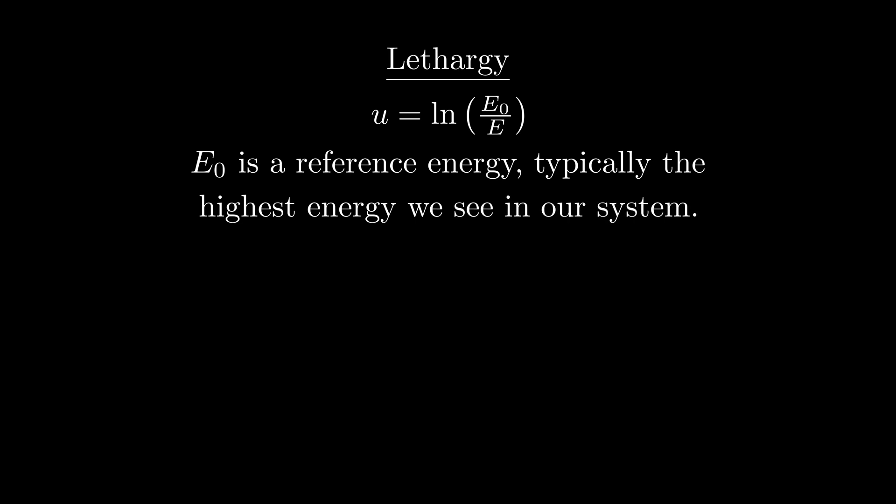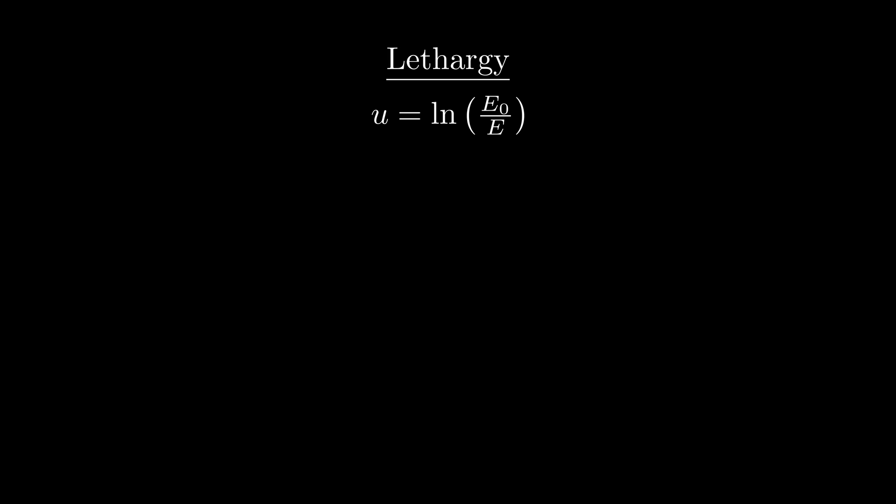Now E0 is typically selected to be the maximum neutron energy that we expect to see in our system. So in a nuclear reactor, it could be the energy of a neutron right after it emerges from a fission event. Notice that lethargy is dimensionless, and it actually increases in magnitude with lower energies. Here's a plot of lethargy as a function of energy for some E0. Now this may seem like a pretty random quantity to introduce, but what's nice about lethargy is that it sort of eliminates a lot of that pesky dependence on incident energy from the formulas that we described previously. And it makes it so that you can sort of treat every scattering event as being equivalent, in some sense.